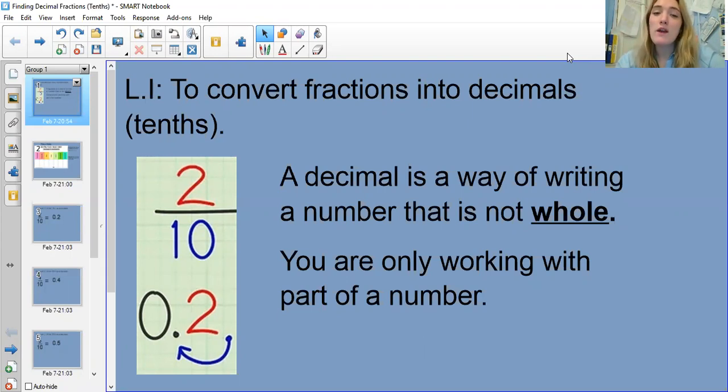Now a decimal is a way of writing a number that is not whole and you are only working with part of a number. That's why fractions and decimals link so closely together because you're working with parts of a number.